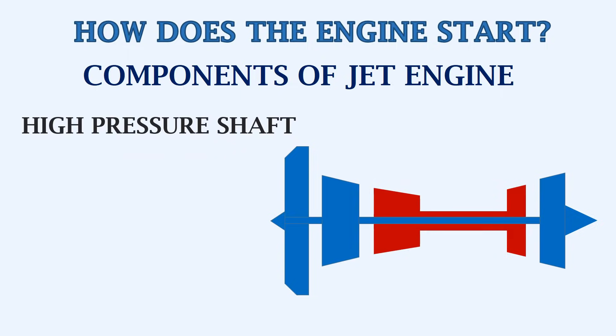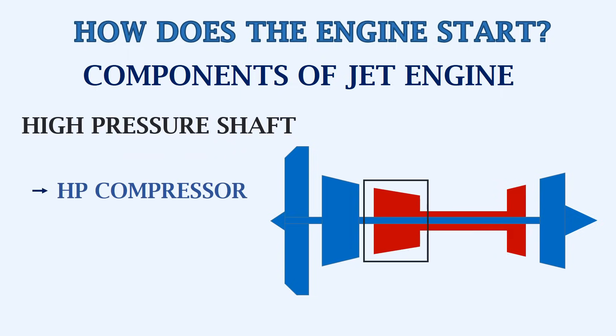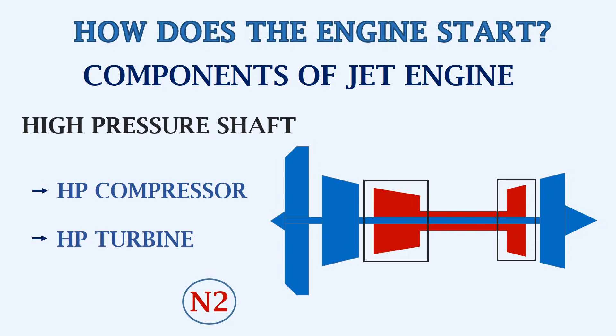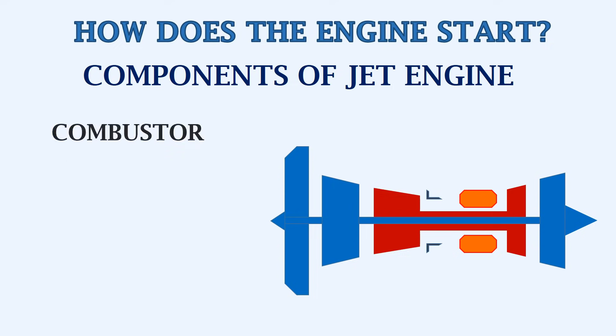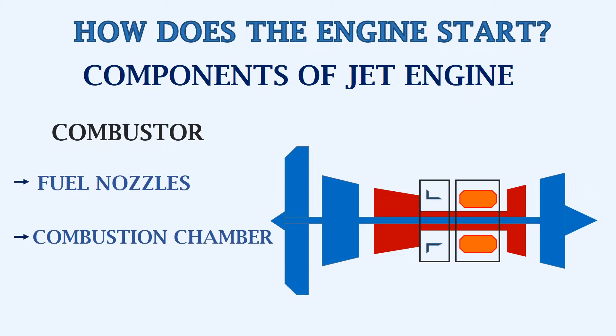Next we have the high pressure shaft. This consists of the high pressure compressor and the high pressure turbine. This shaft is also called the N2 shaft, or the HP shaft. Between the compressor and the turbine sections, we have the combustor, which consists of fuel nozzles, igniters, and the combustion chamber.